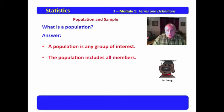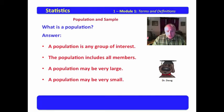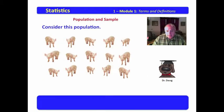Now the population includes all members in the group of interest. That is the distinction. A population is any group of interest, but all members in the group of interest. And a population may be very large, a population may be very small.